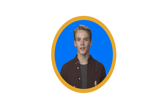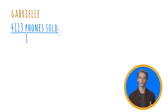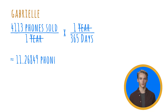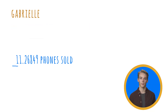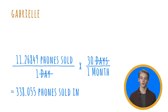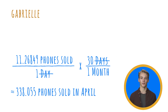For example, let's calculate the number of phones sold in April by Gabrielle, who's on team C. Gabrielle sold 4,113 phones last year. We assume that she would sell 4,113 divided by 365 in one day, and then we multiply this by the number of days in April — 30 — to estimate how many phones she sold that month. This gives us 338.055 phones sold in April for Gabrielle.